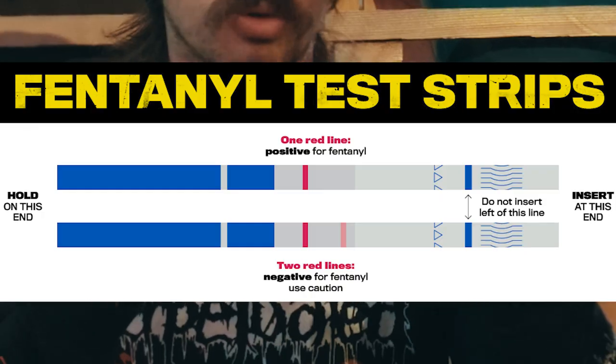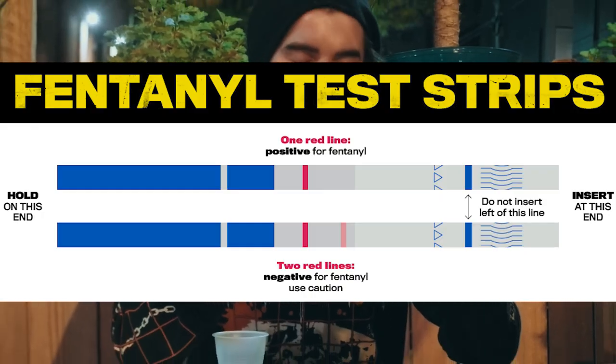Next, we're going to learn how to test your drugs. Fentanyl is unfortunately present in way more than just opiates. A lot of people have been experiencing loss due to fentanyl-infused cocaine, which is definitely a substance our scene is very familiar with. So it's very important for all of us to learn, if we're going to get high, how to do it responsibly. The wavy line on the fentanyl test strip is what we're going to be putting in the solution. Two lines means negative, and one line means there is fentanyl in your drugs.